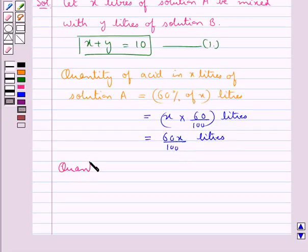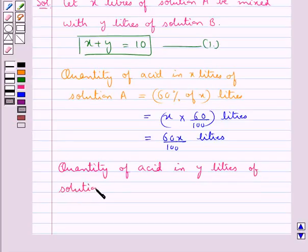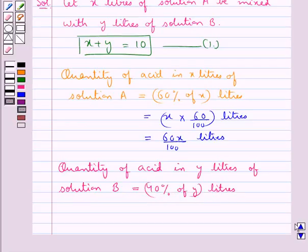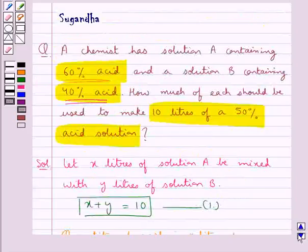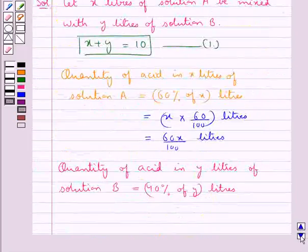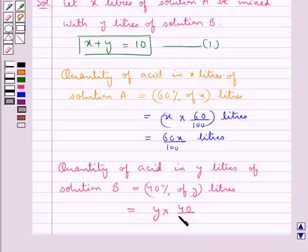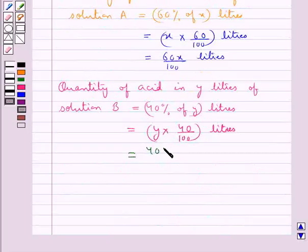Next, we find out the quantity of acid in y litres of solution B. This would be equal to 40% of y litres, since solution B contains 40% acid. That is equal to y into 40 upon 100 litres, or 40y upon 100 litres.